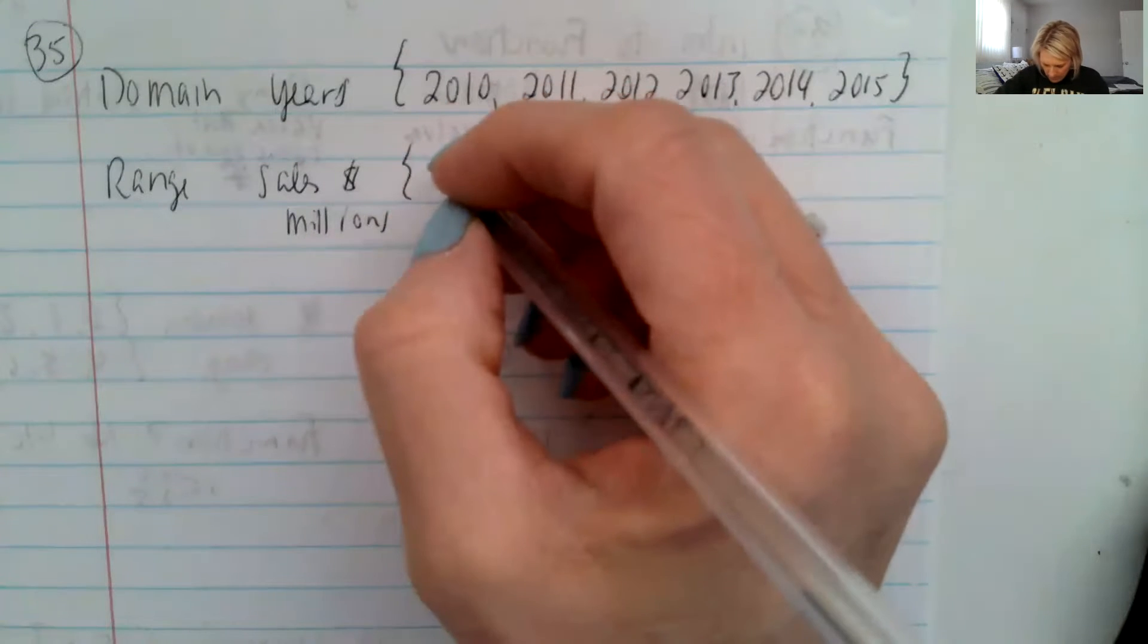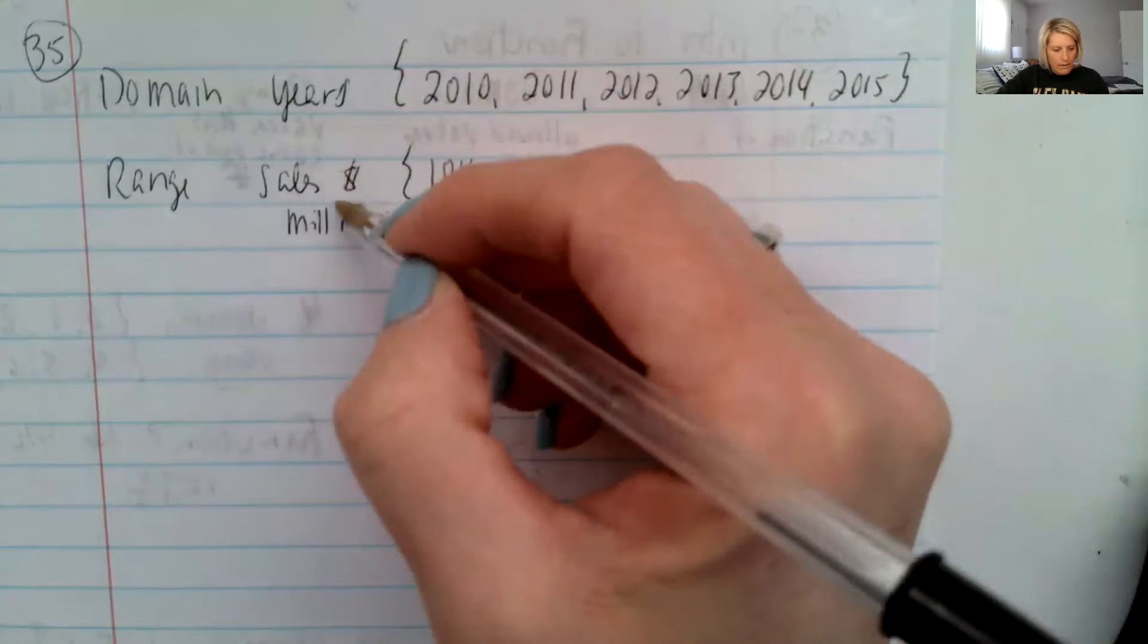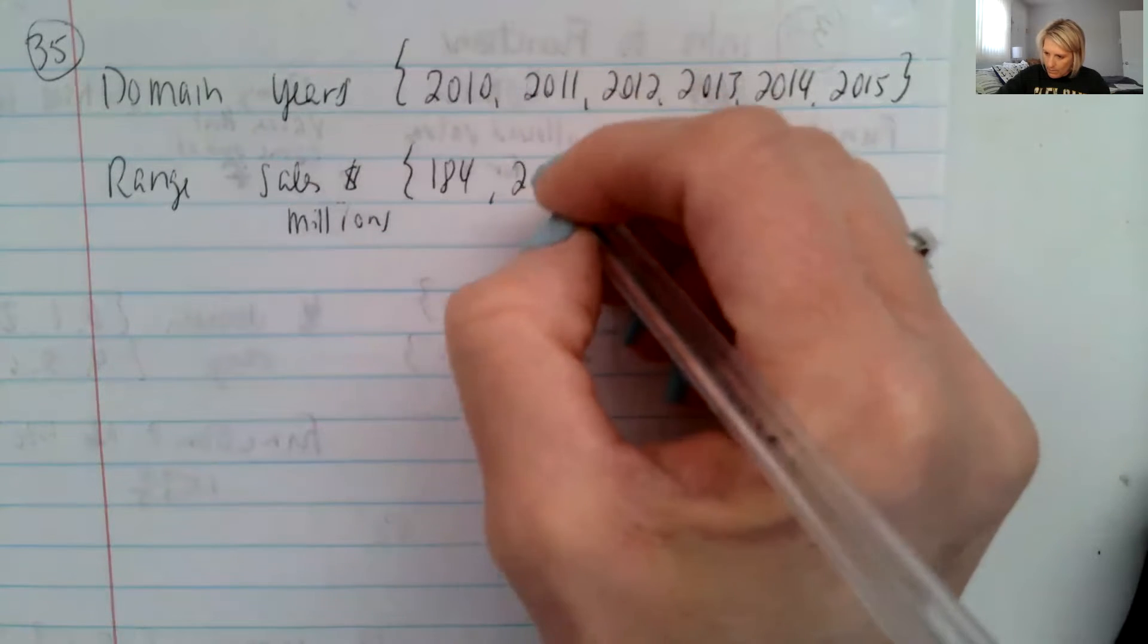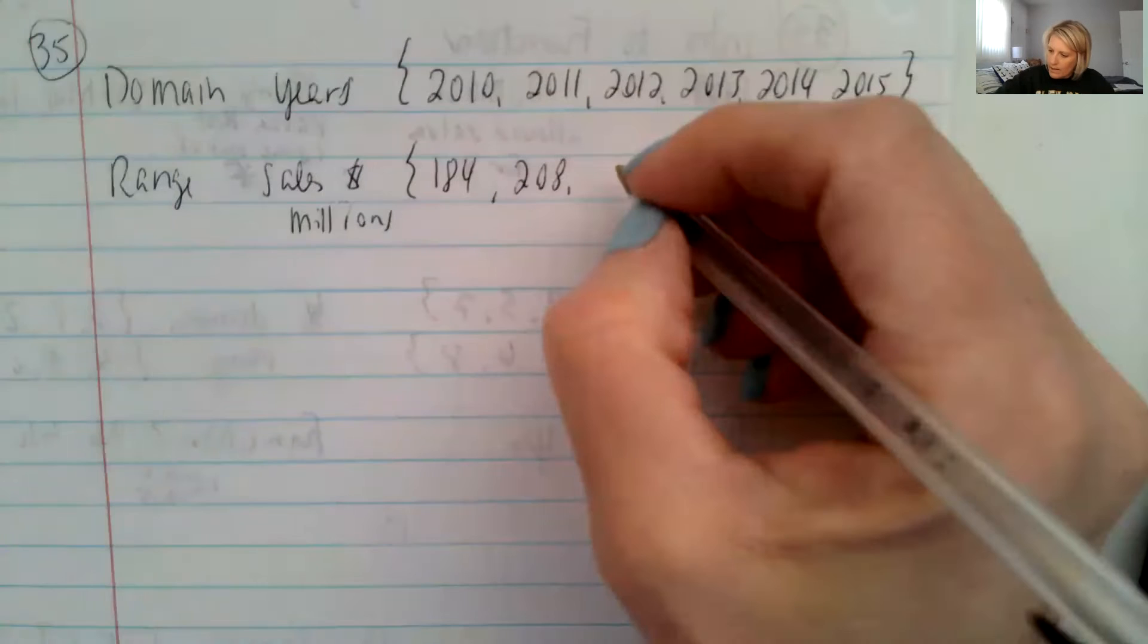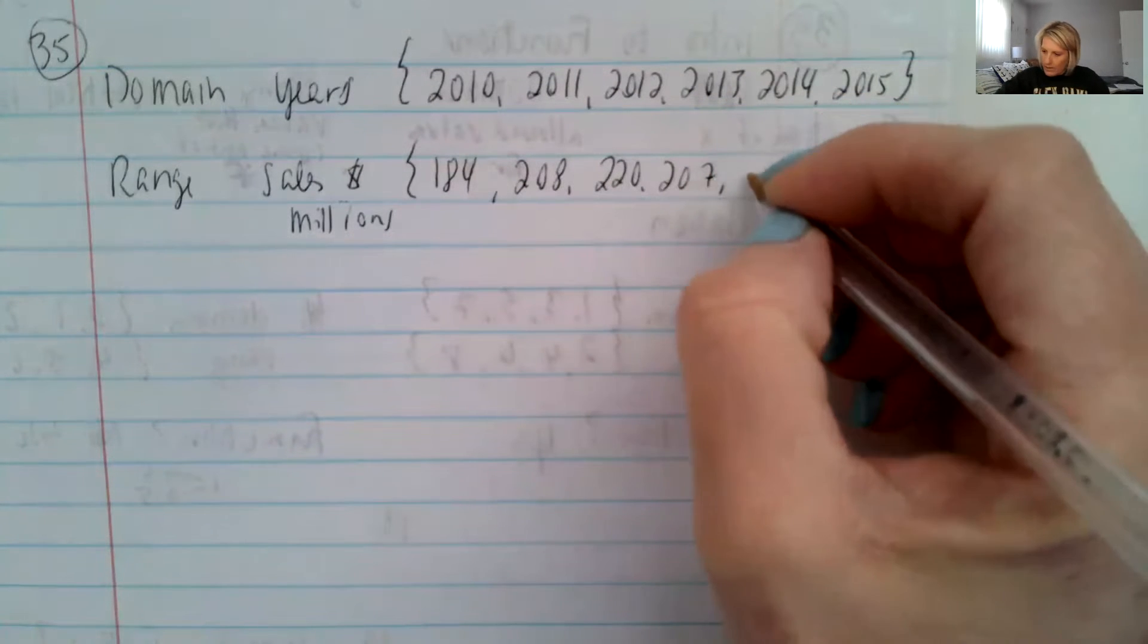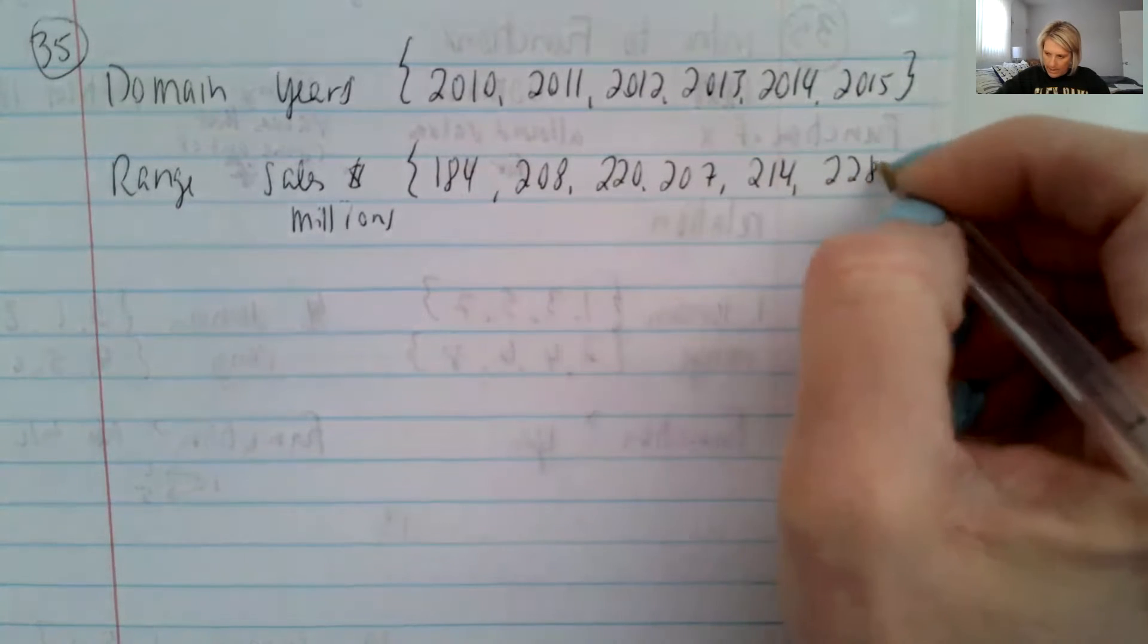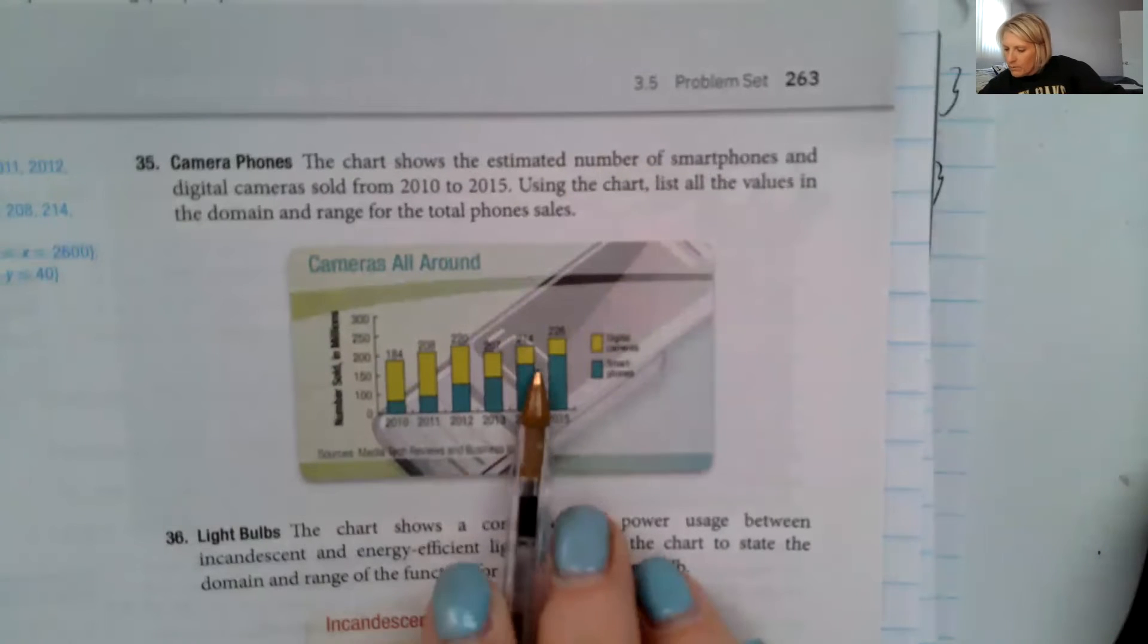And then my sales range goes 184 and because I've already said that they're in sales and dollars and millions, I'm just going to list the numbers, comma 208, 220, 207, 214 and 228. And that's from right here.